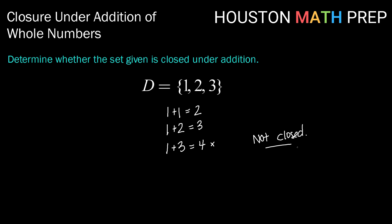4 is not in our set here. So that means this one is not closed. If even one of the possible additions doesn't result in being an element in the set, we are not closed under addition here.